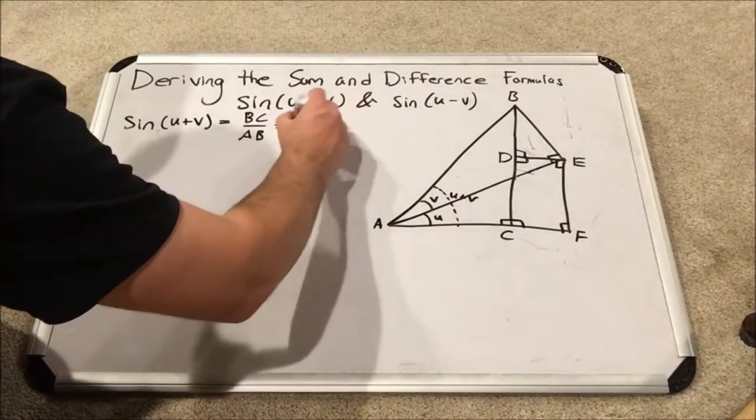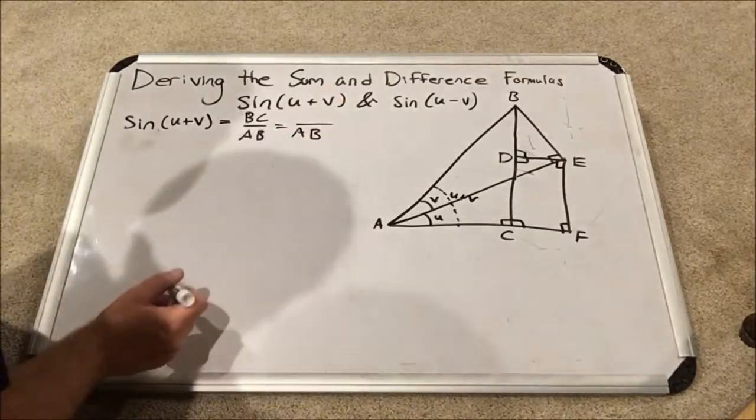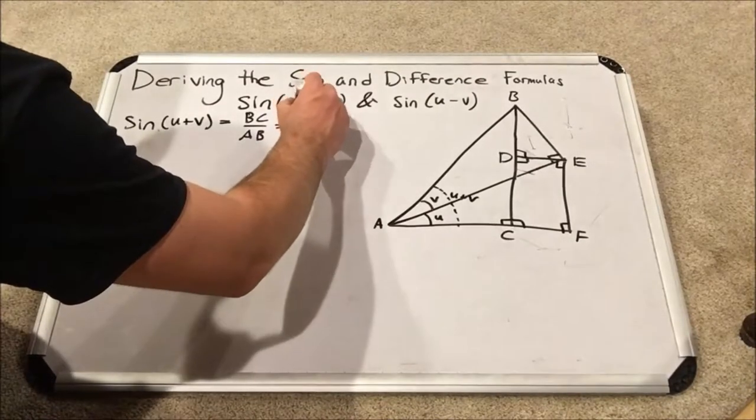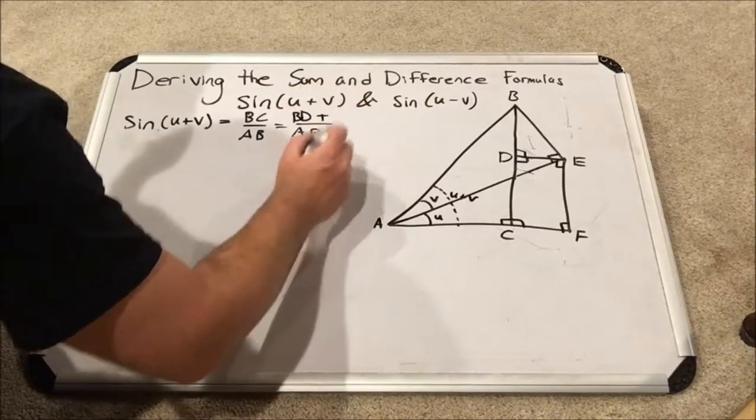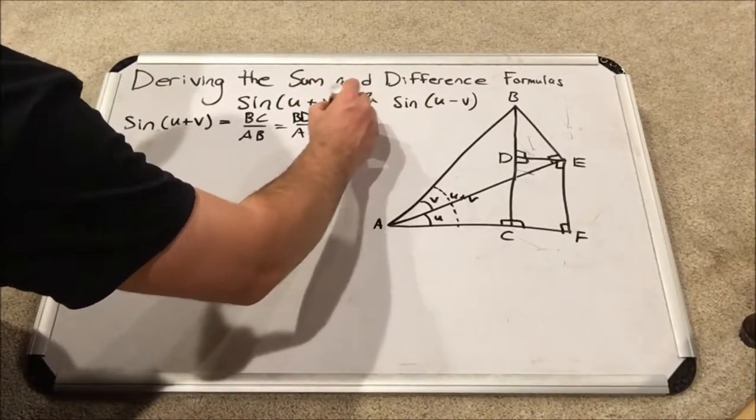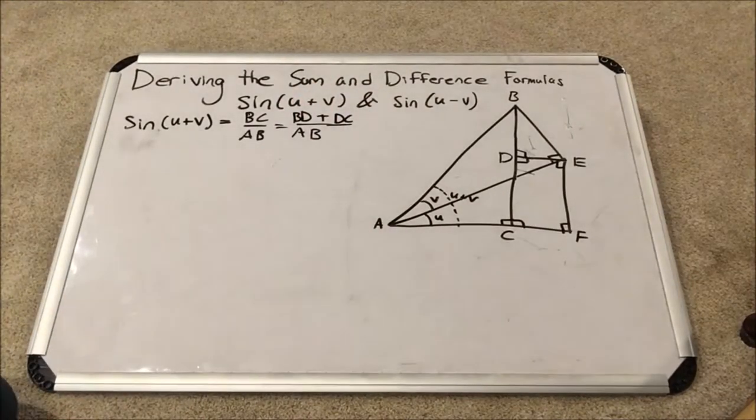So let's write this instead like that. I'm not going to change the denominator, just the top. It's going to be BD plus DC.